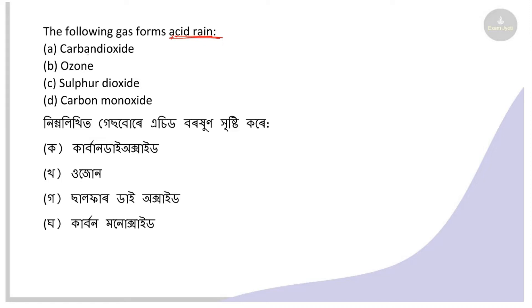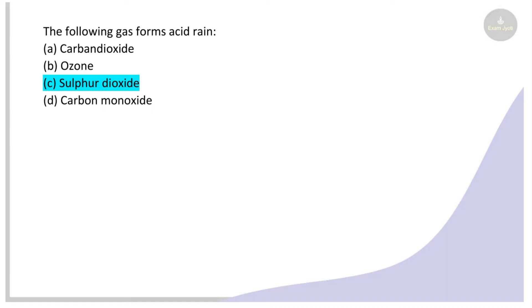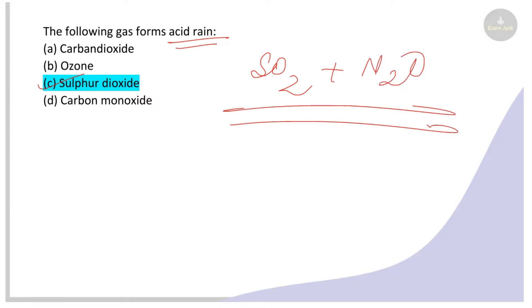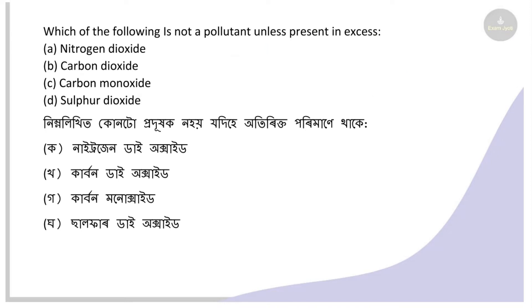Next: Which gas causes acid rain? Options: carbon dioxide, ozone, sulfur dioxide, carbon monoxide. The right answer is sulfur dioxide. Acid rain is caused by sulfur dioxide and nitrogen dioxide — they form sulfuric acid and nitric acid respectively.